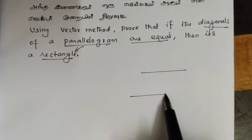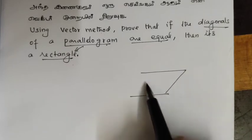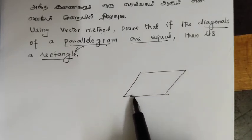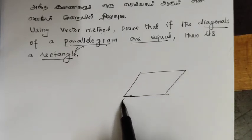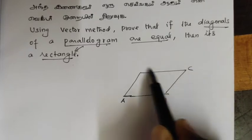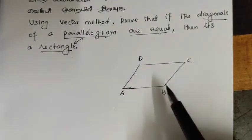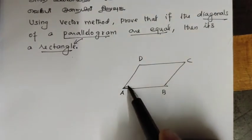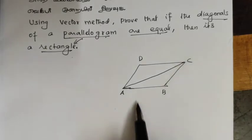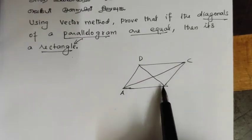This is the parallelogram ABCD, with vertices a, b, c, d. a, b, c, d are equal. This is the parallelogram. The parallelogram has diagonals.